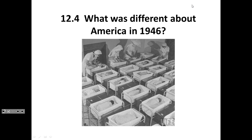You might recognize this question — we asked a very similar question at the end of the Great War. What was different about America in 1919? Some of the things we talked about then were changes in society for women, the lost generation, the way we looked at war, economic advancements after World War I, strong nativism leading to the Emergency Quota Act, Schenck versus the United States, and civil liberties. So we're going to have the same conversation, but after a much bigger and more profound war — what was different about America in 1946?